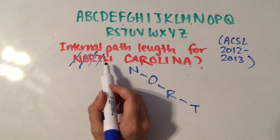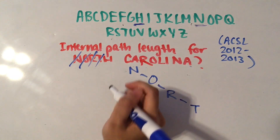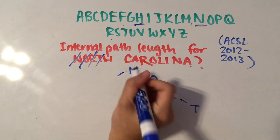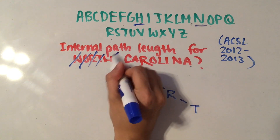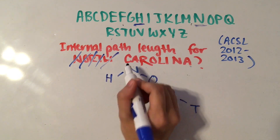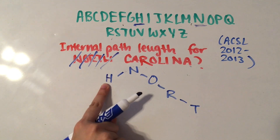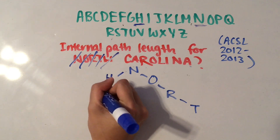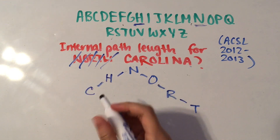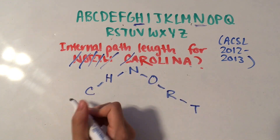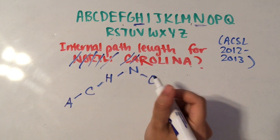Then we have H which comes right before N, so we're going to make a branch to the left. And then we have C which comes before both N and H, so we're going to make it go to the left again. And A which of course precedes all other letters.